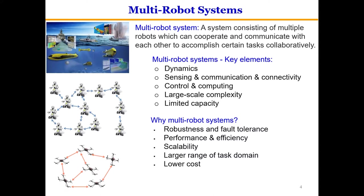Multi-robot systems are a class of complex large-scale systems consisting of the following key elements: Dynamics — what are the models that govern the behaviors of the robots? Sensing — how the robots measure properties of themselves and the external environment. Communication — how robots communicate with each other and maintain connectivity. Control — how control laws can be designed to achieve desired performance, and how the robot team makes decisions intelligently.